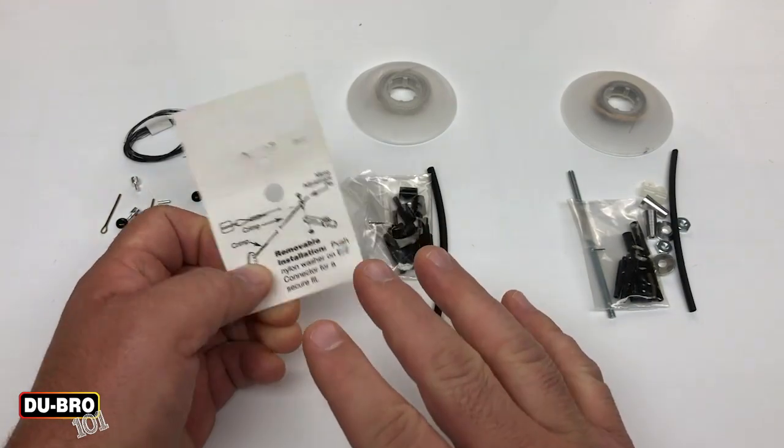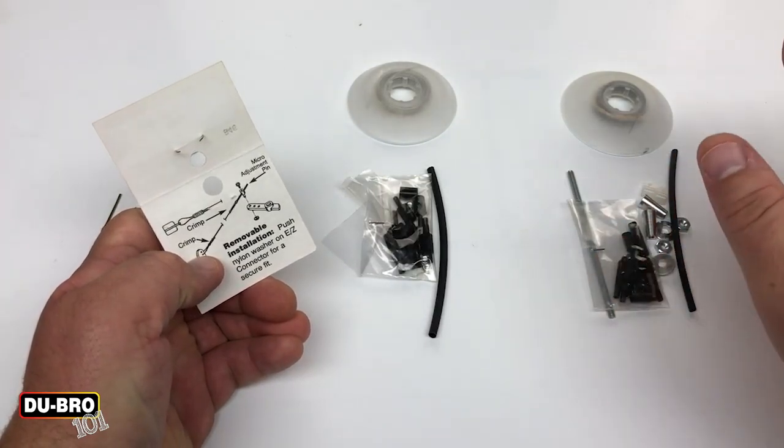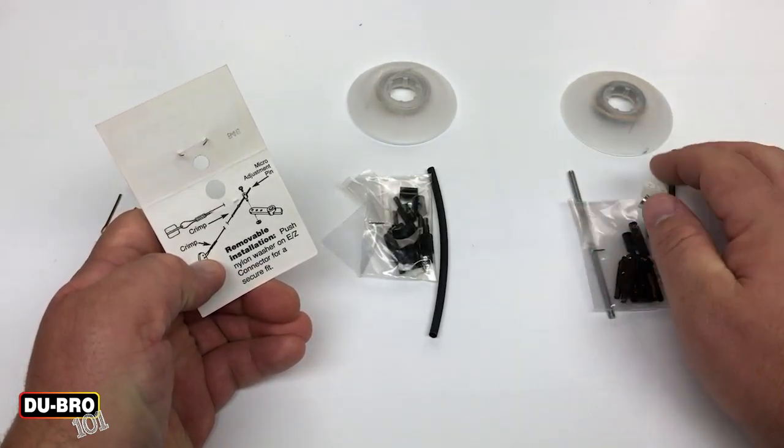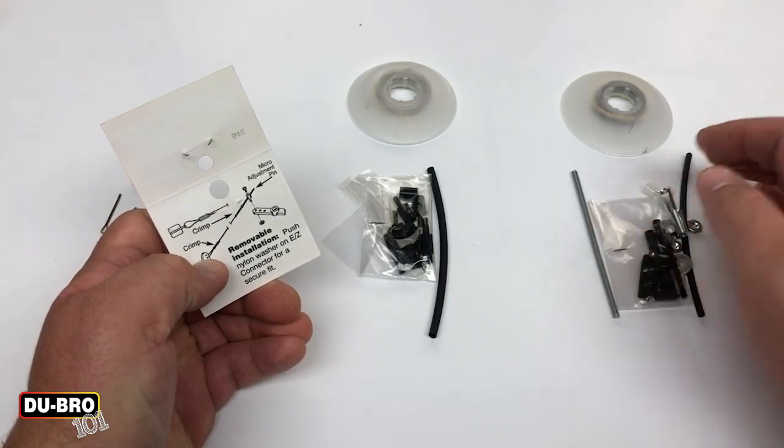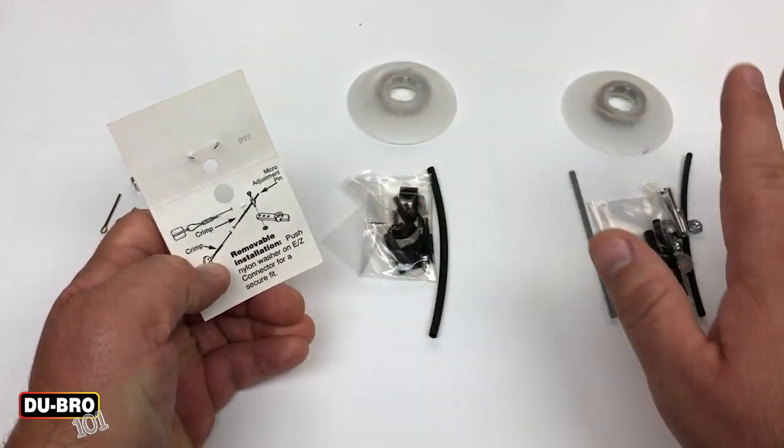So moving forward, we're going to focus on the larger size. These two kits assemble the same. The largest kit has a special control surface attachment system that we'll go over so that we cover everything.